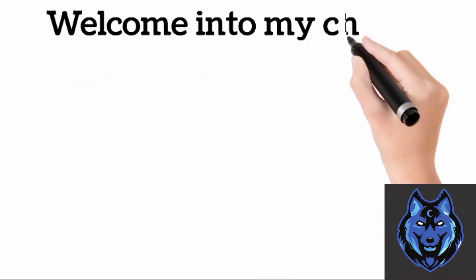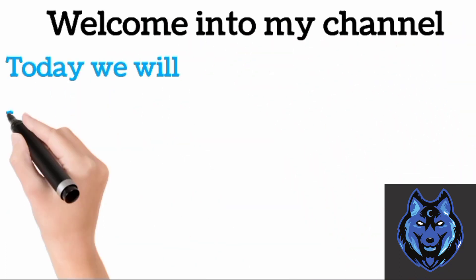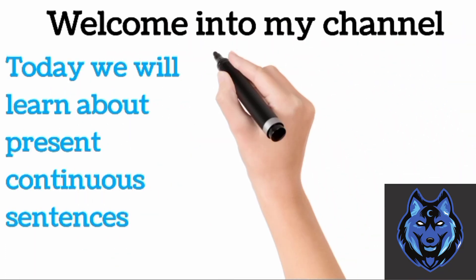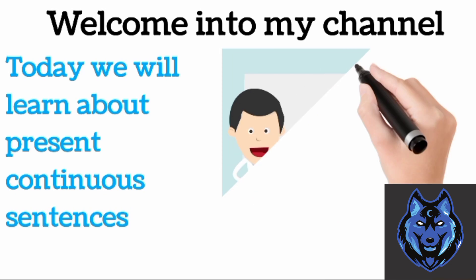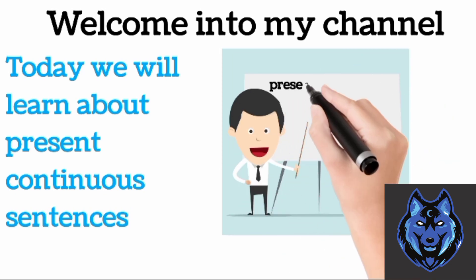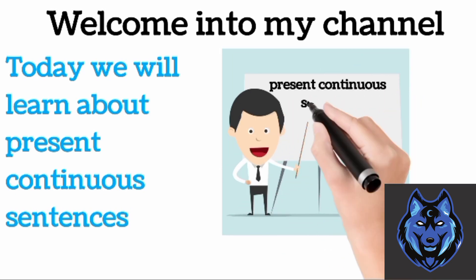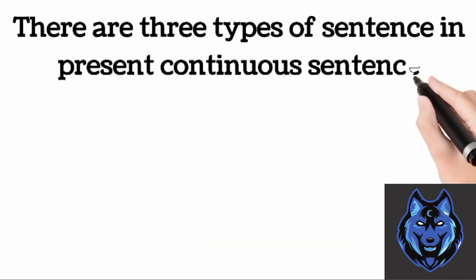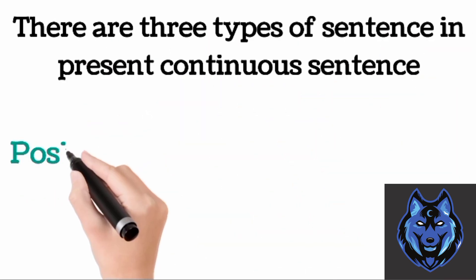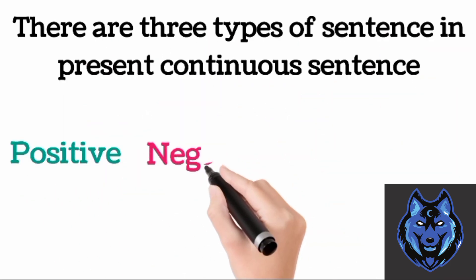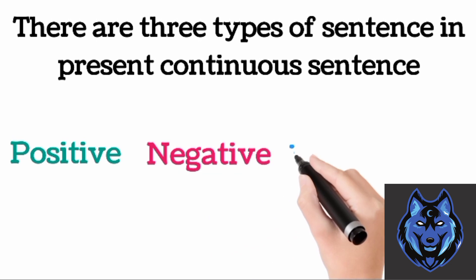Welcome to my channel. Today we will learn about present continuous sentences. There are three types of present continuous sentences: positive, negative, and interrogative.